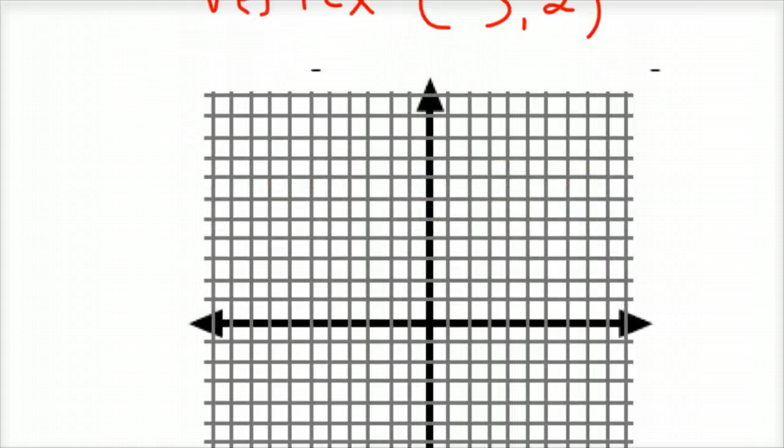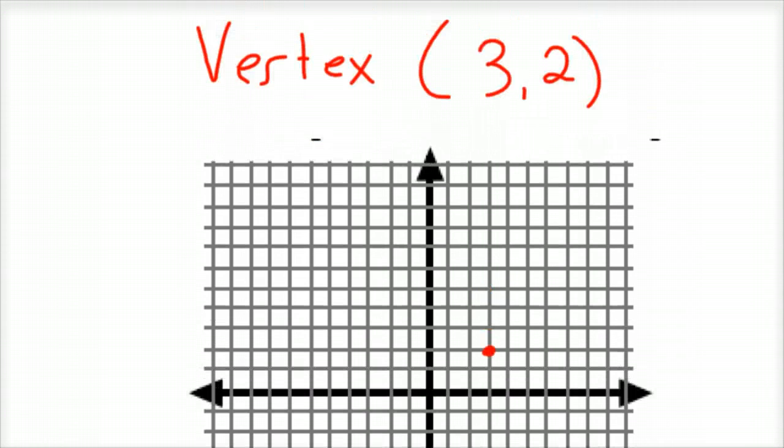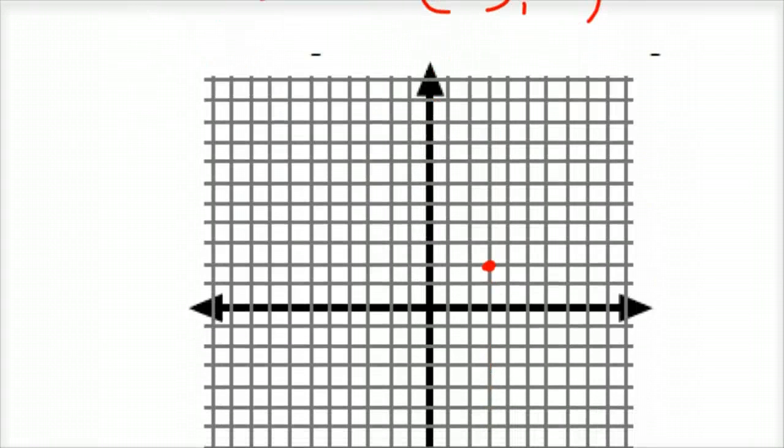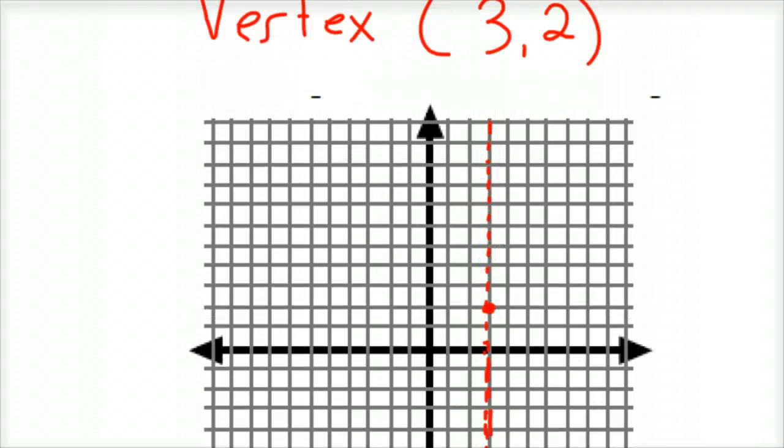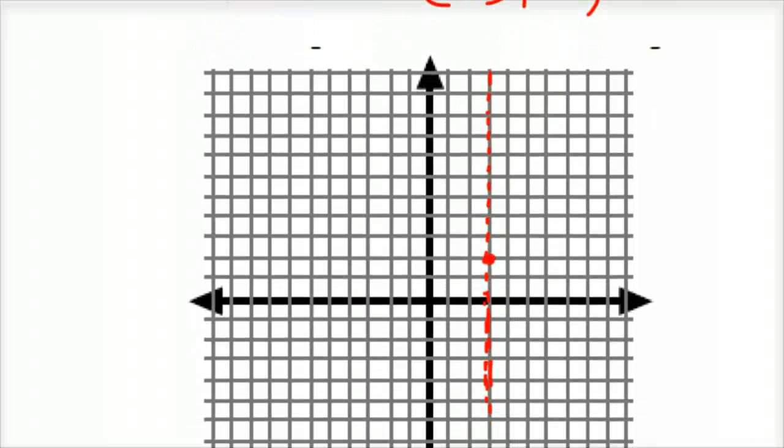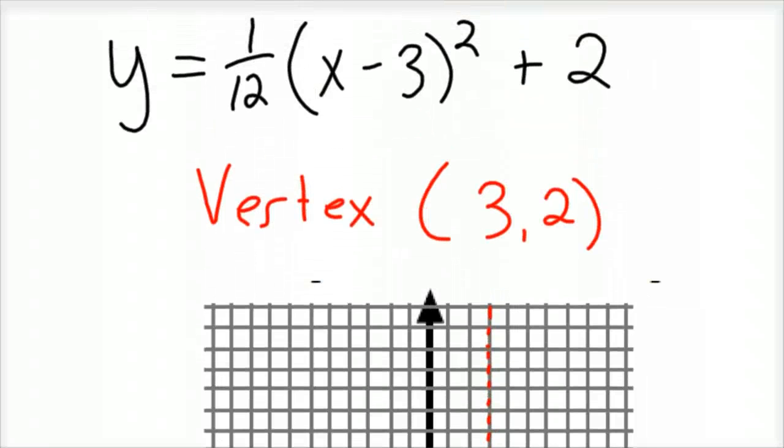Let me pull in some graph paper. So 3, 2: 1, 2, 3 and 1, 2. There's my vertex. My axis of symmetry, since this is a y equals graph. There is our vertex and axis of symmetry.